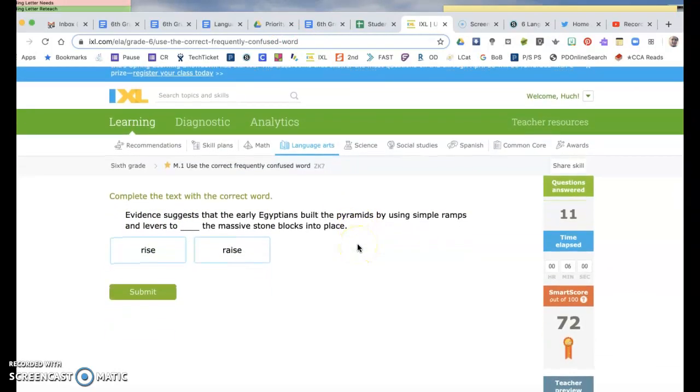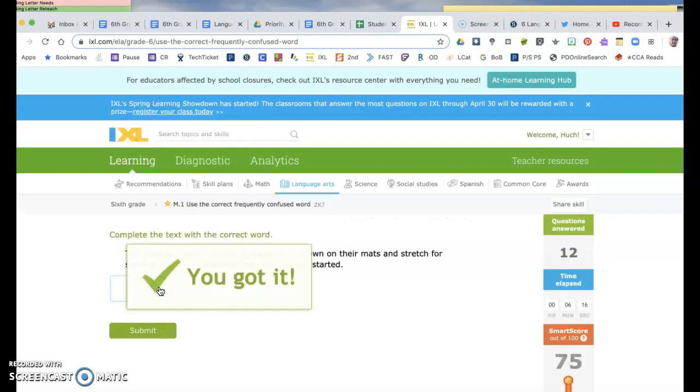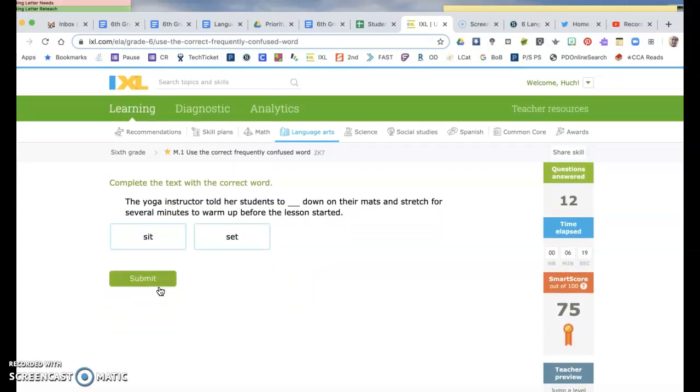Evidence suggests that early Egyptians built the pyramids by using simple ramps and levers to raise the massive stone blocks into place. So raise is the one that we're going to look for here. The yoga instructor told her students to sit down on their mats. Set is like lay and lie. Lie, it's sit and set. You sit down, you lie down. Other things are laid down, you lay it down, or you set it on the table.